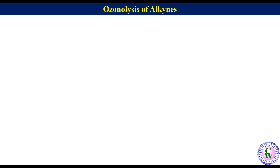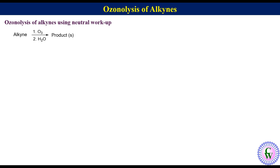We will first discuss ozonolysis of alkynes involving neutral workup. In this, an alkyne is allowed to react with ozone and then the workup is done with water to get the product. When a terminal alkyne is allowed to react with ozone followed by neutral workup with water, it produces carboxylic acid and carbon dioxide. To draw the structure of products, just break the molecule through the C-C triple bond, convert the internal carbon of the alkyne into carboxylic acid and the terminal carbon to carbon dioxide.